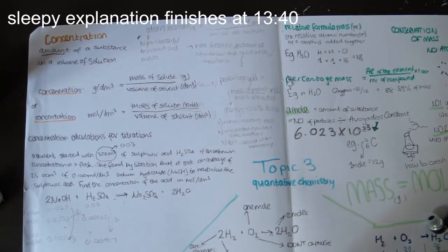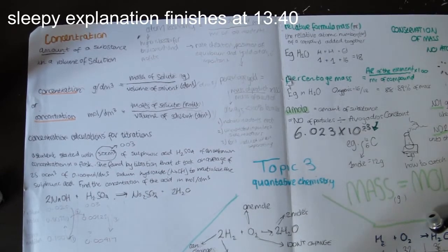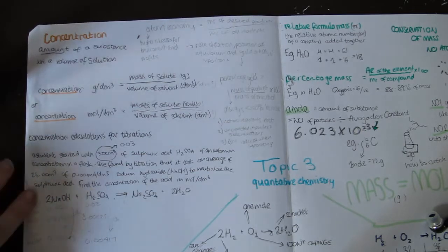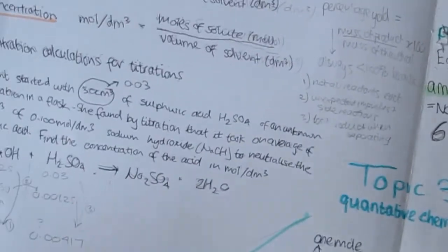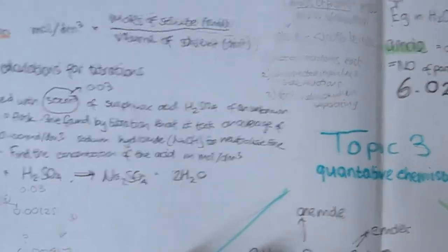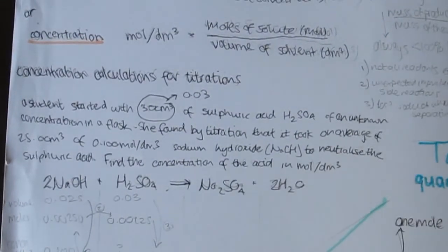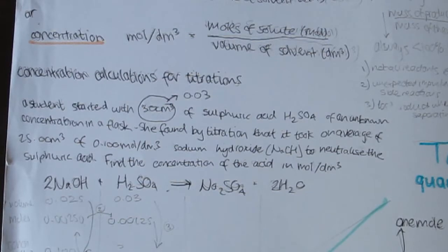Hey, so it's 6am, and I just realised I didn't explain this question in the script. So here we go. This is an example GCSE question. A student started with 30 centimetres cubed of sulphuric acid, which is H2SO4, of an unknown concentration in a flask. She found by titration that it took an average of 25.0 centimetres cubed, 0.1 mol per decimetres cubed solution of sodium hydroxide to neutralise the sulfuric acid. Find the concentration of the acid in moles per decimetres cubed.